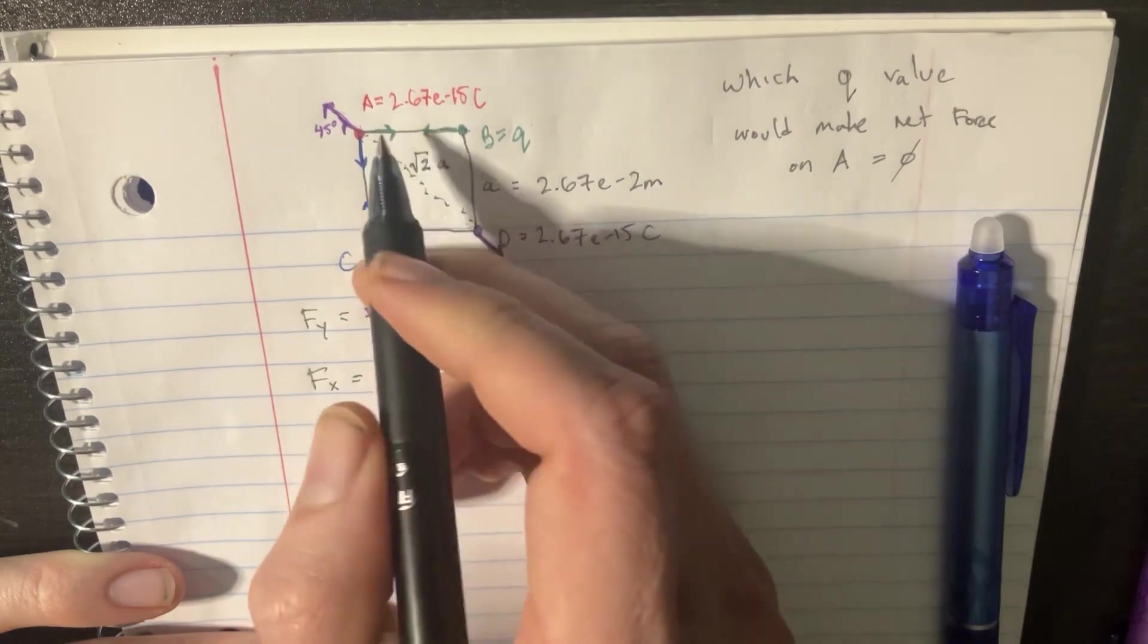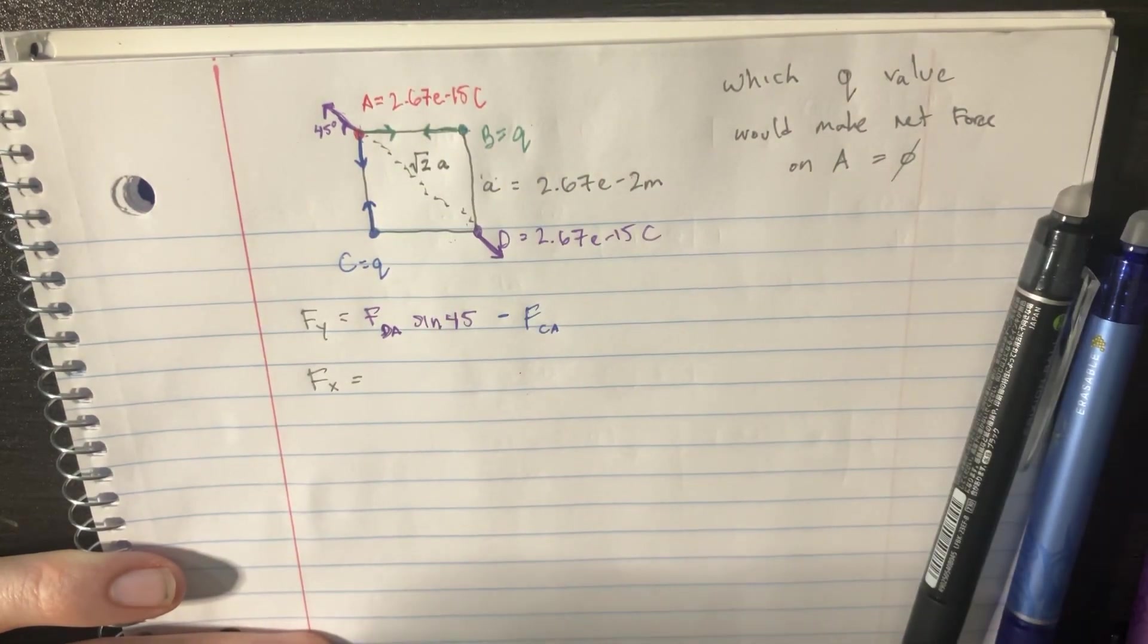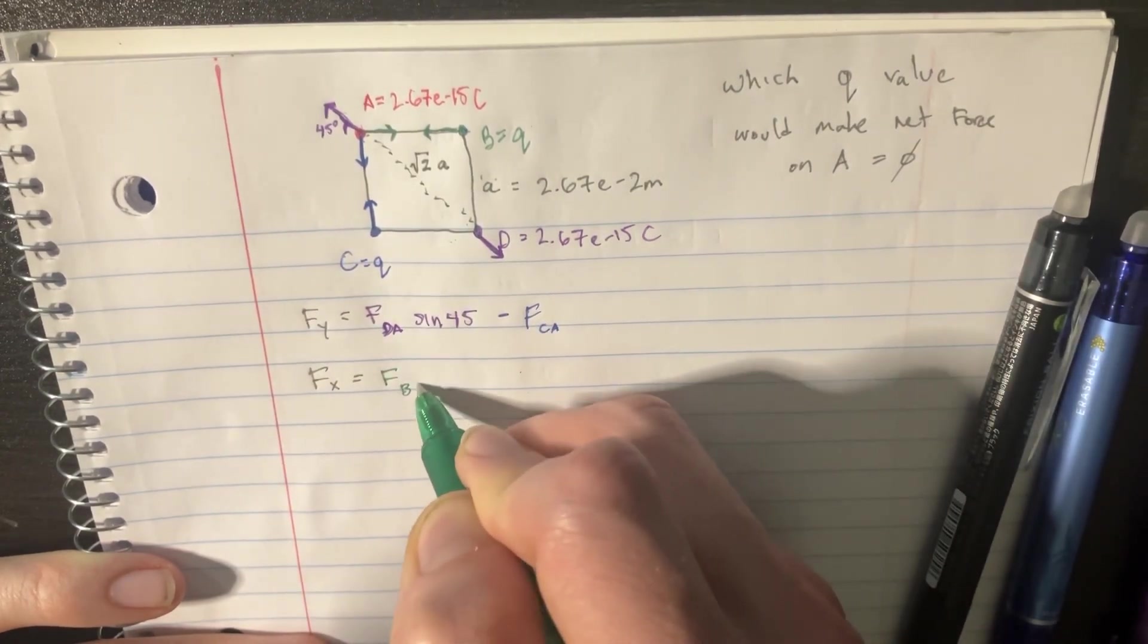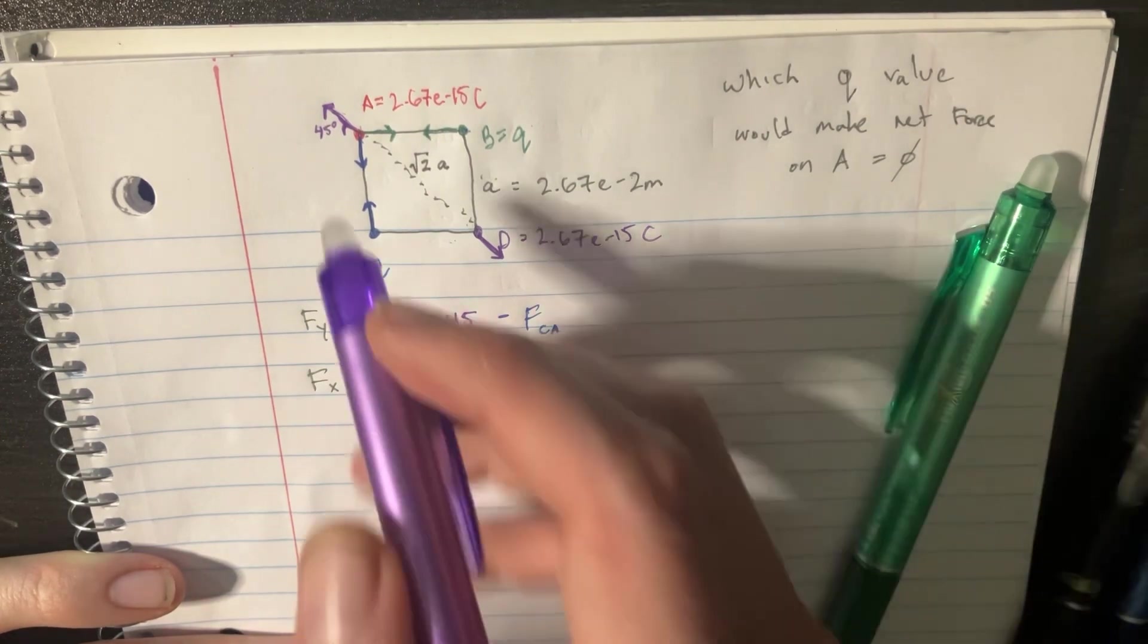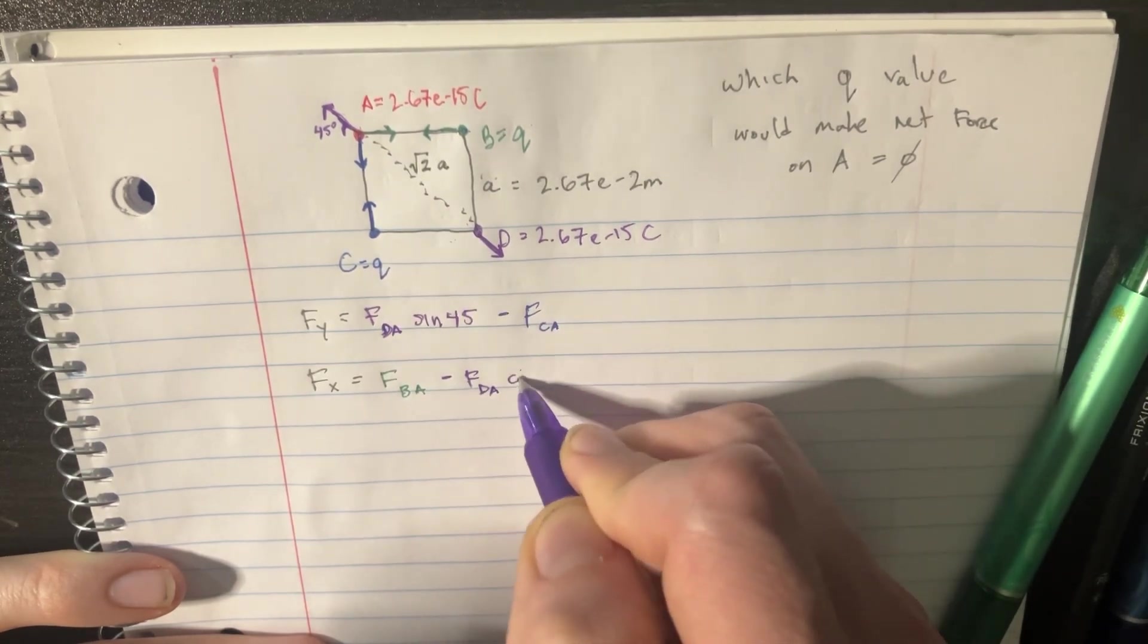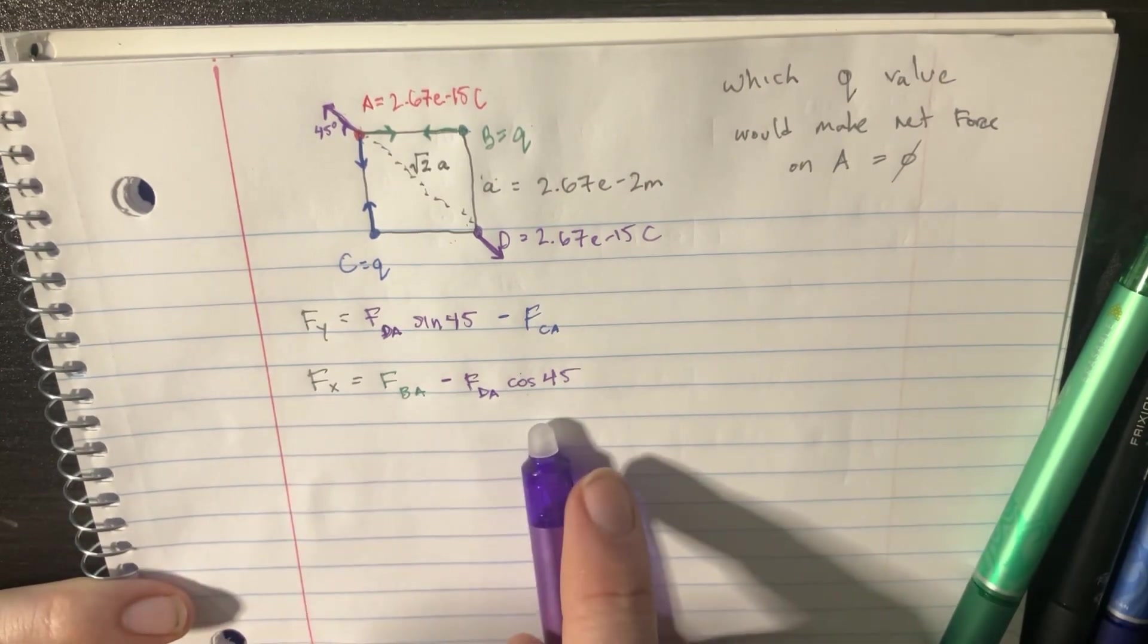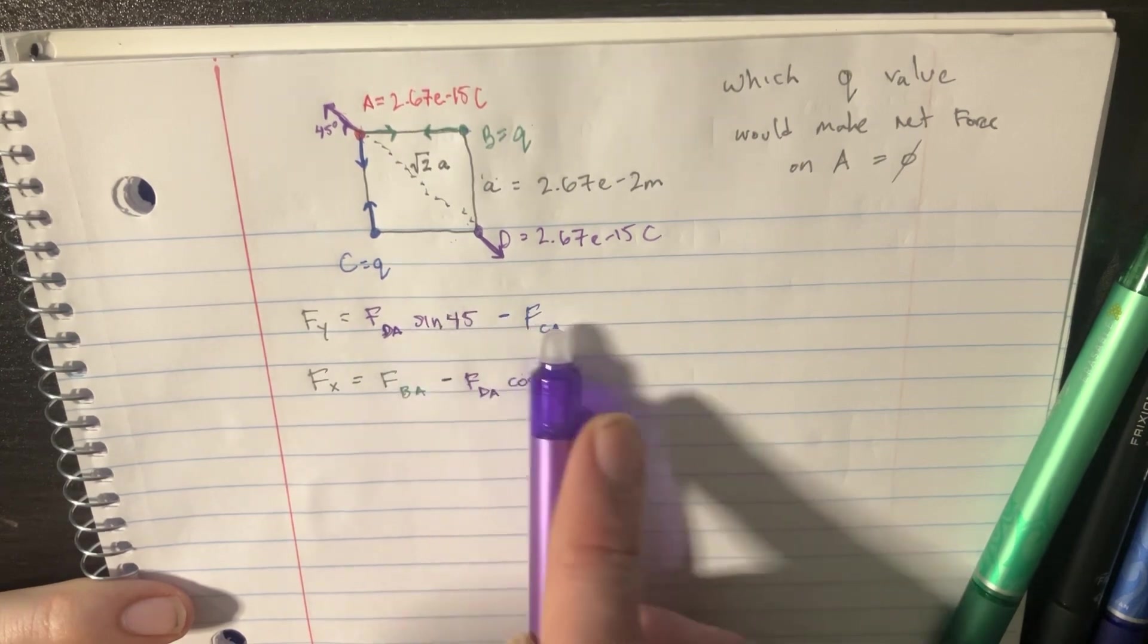And for Fx direction, then we have very similar things. We're going to start with positive. It's going to be this way. So it's F of B on A. And then we're going to subtract the purple one, which is minus Fd on A, but with the cosine of 45. And now we can see how these two, because this is going to be equal to zero, these two are just equal to each other.